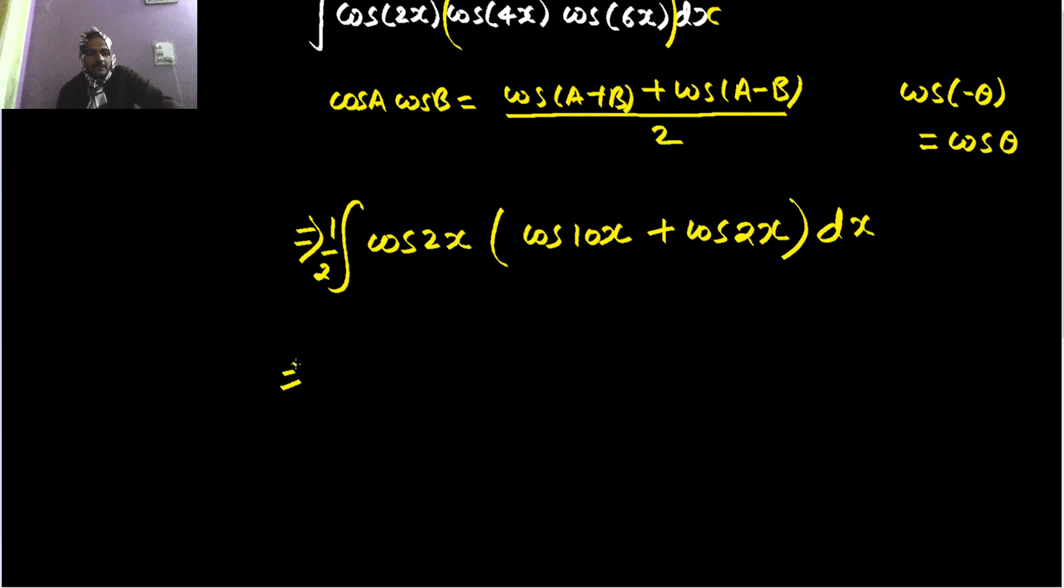Now if you open this, you will get half cos 2x cos 10x. I can separate this out plus half cos square 2x and then the dx. Fine.